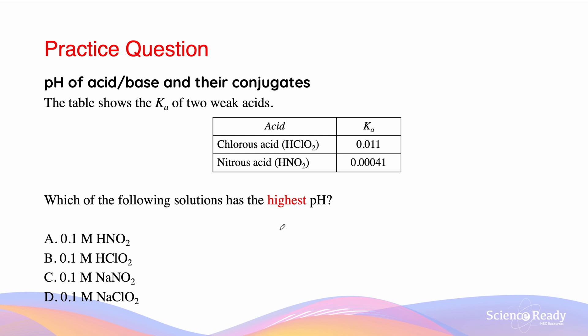This question is quite similar. It asks us which one has the highest pH. So as we looked at it earlier, we know that nitrous acid has a stronger conjugate base than that of chlorous acid, and therefore it's going to be the conjugate base of nitrous acid, which is NaNO2, and our answer is going to be C.